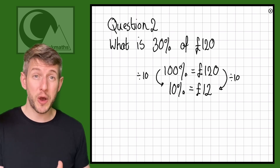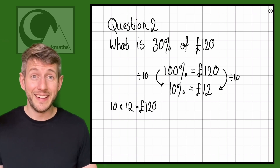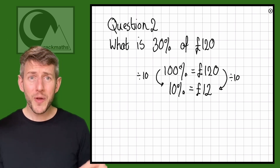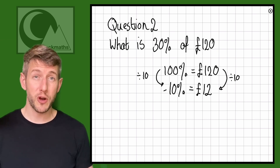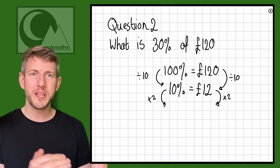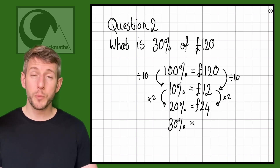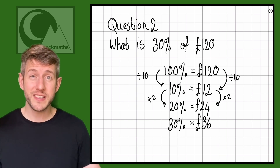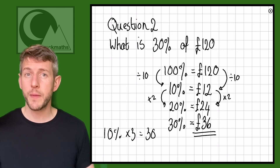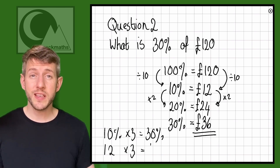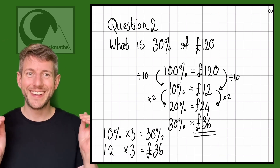Now that we've got 10% is £12 we can count up. 10% is £12, so 20% will be £24, and 30% will be another lot of £12 which takes us to £36. We could do that in one step: 10% times 3 equals 30%, and 12 times 3 equals 36. So 30% of £120 is £36.